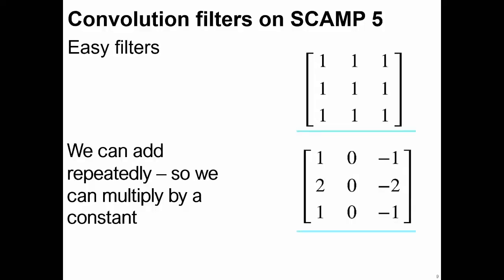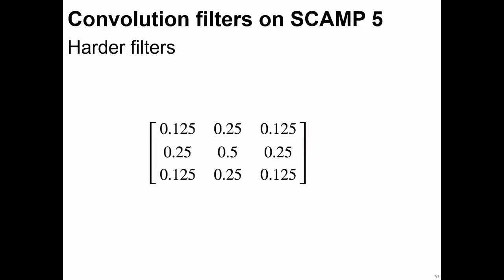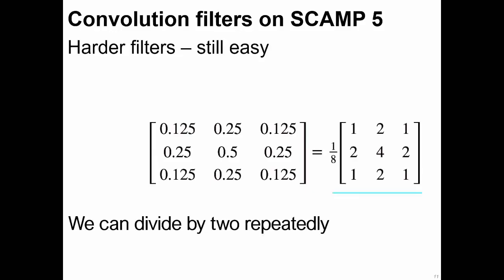Since there's no possibility for multiplication on this device, we have to simulate everything using additions, subtractions, and shifts of values across the array. For easy filters like a box filter or Sobel edge detection filter, we only have integers in the filter kernel, so we can just add the numbers together. For more complicated ones where all values are powers of 2, we can use the divide-by-2 instruction on the device.